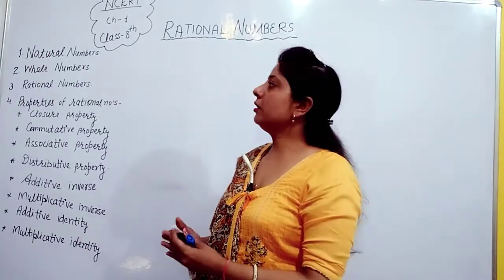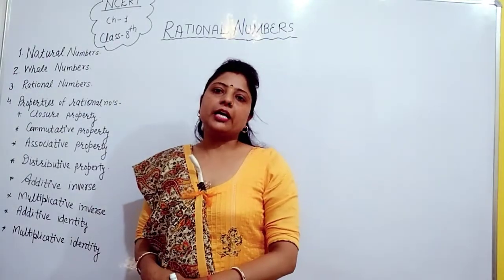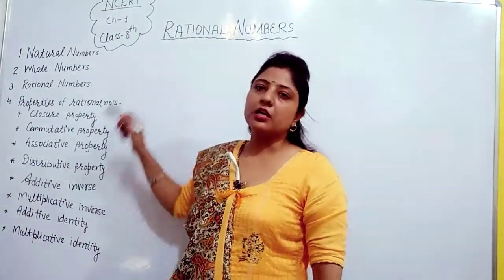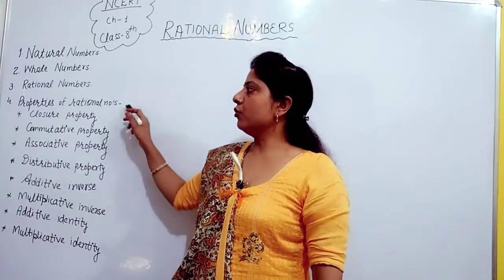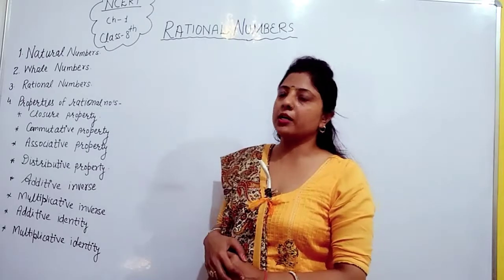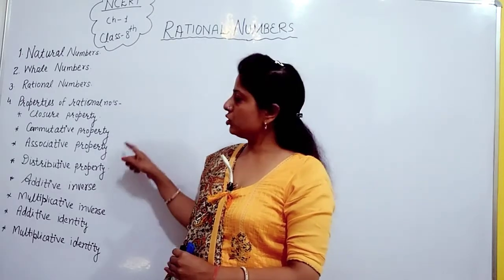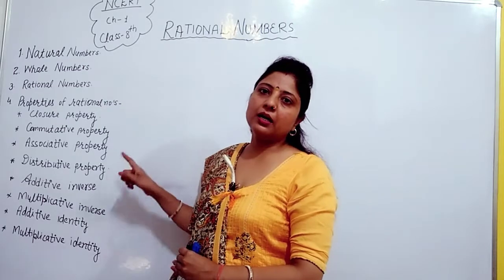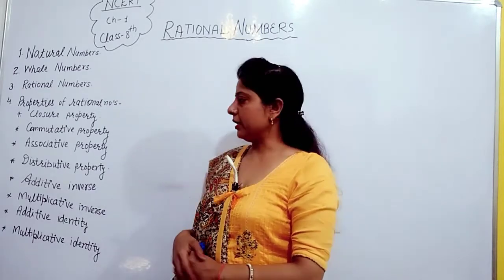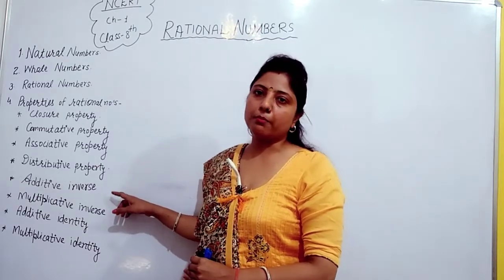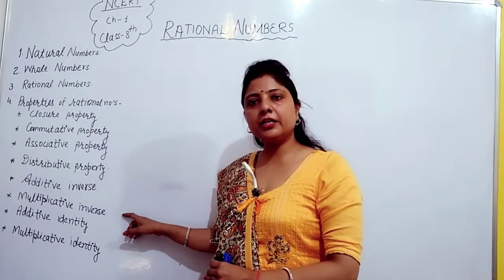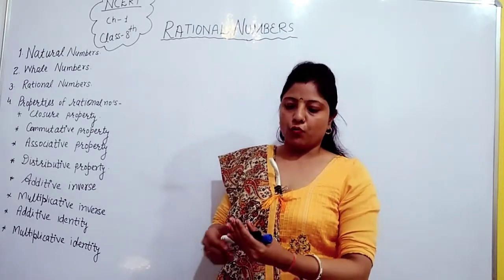First we cover the topics. First is Natural Number, second is Whole Number, third is Rational Number, fourth is Properties of Rational Number — which are: Closure Property, Commutative Property, Associative Property, and Distributive Property. Next: Additive Inverse, Multiplicative Inverse, Additive Identity and Multiplicative Identity.